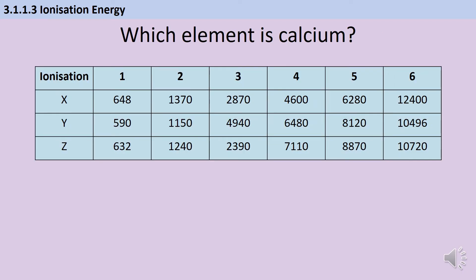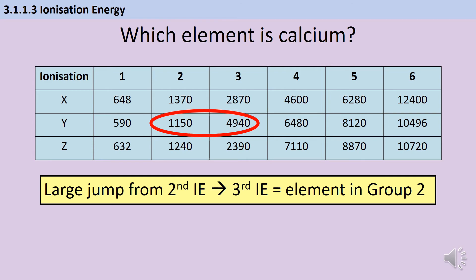A common exam question gives data for multiple elements and asks you to identify which is calcium. Calcium is in group two, so you can remove two electrons comparatively easily, but taking a third requires much more energy because you go into a new shell. You're looking for a big jump between the second and third ionization energies. Comparing X, Y and Z, element Y shows a much bigger jump between the second and third, so Y must be calcium — unlike scandium and vanadium, which are not in group two.